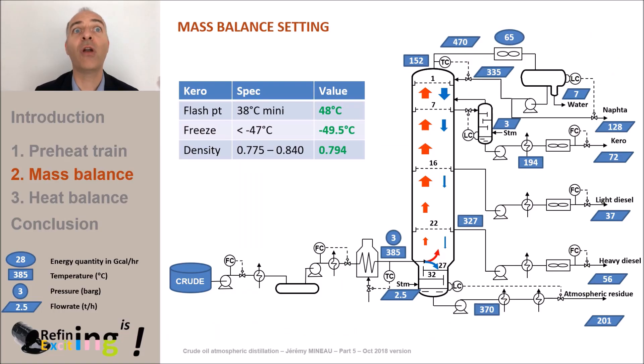We start from a light diesel flow of 37 tons per hour. Typically a side stripper is also installed on the light diesel cut. Remember, the side stripper which was installed for kerosene was considered to manage the flashpoint of the kerosene and thus to be able to produce a kerosene with a reasonable flashpoint while maintaining a not too high naphtha flow.